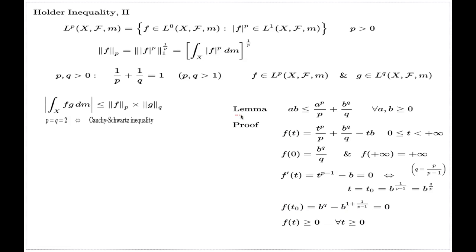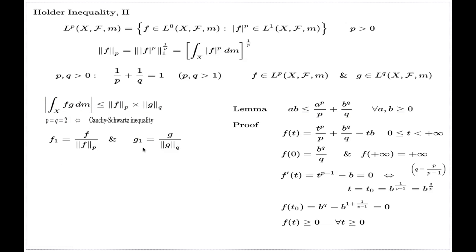Now, having this lemma, I can argue this inequality as follows. I introduce two auxiliary functions f1 and g1. To be precise, I first note that if the denominator — the LP norm of f or the LQ norm of g — is zero, that would imply that f or g is identically zero almost everywhere, which renders the integral zero and the inequality holds trivially.